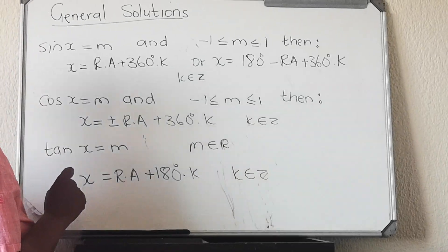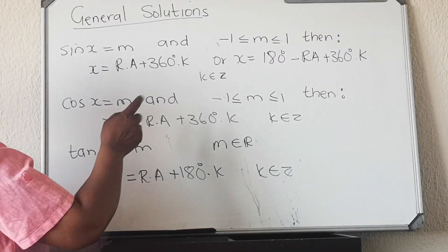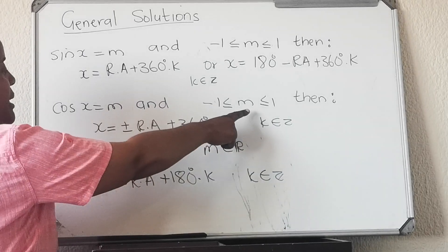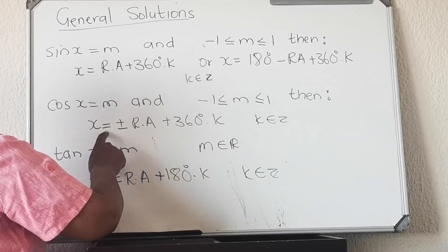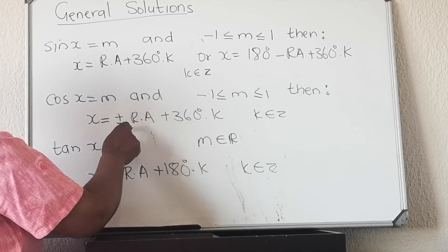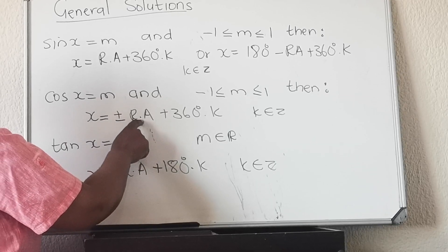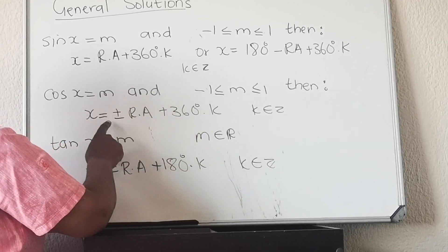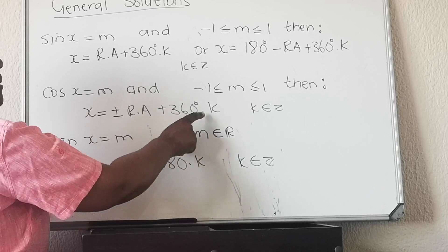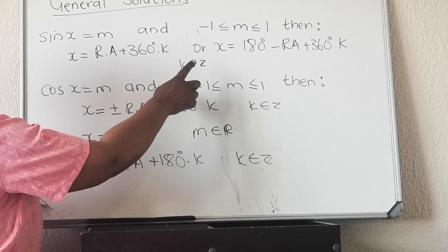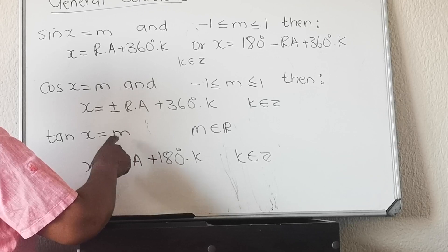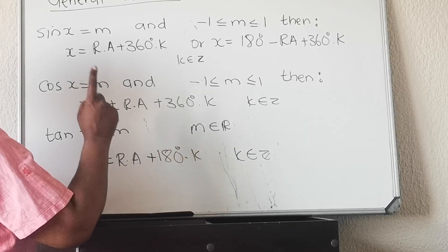I'm going to show you how to calculate the reference angle, and you need to add that k is an element of integers. If you are given cosine, same restriction, but with cosine you also have two solutions: x equals plus RA plus 360k and minus RA plus 360k.